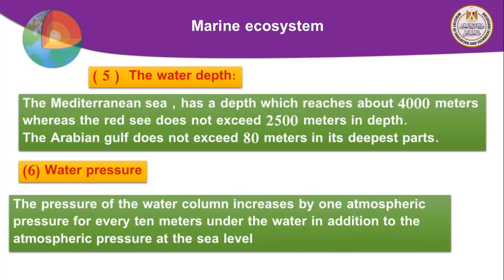Before discussing water pressure, we start at sea level where atmospheric pressure equals 1 atm. As you go deeper, the pressure of the water column increases by 1 atmospheric pressure for every 10 meters under water, in addition to the atmospheric pressure at sea level.